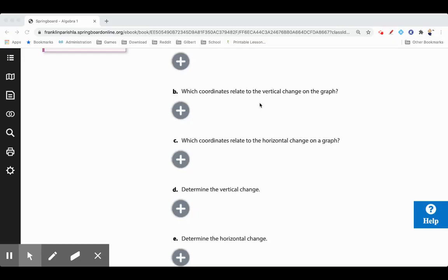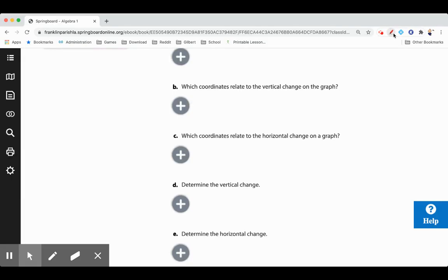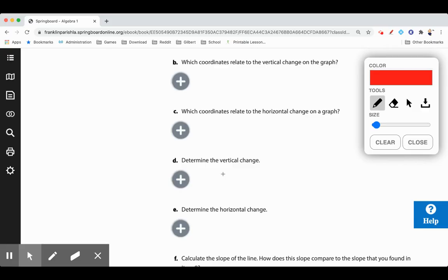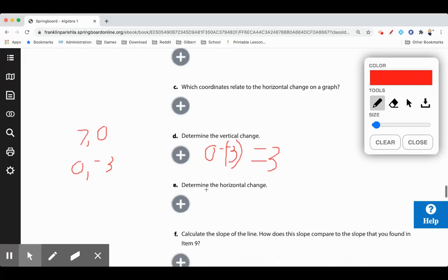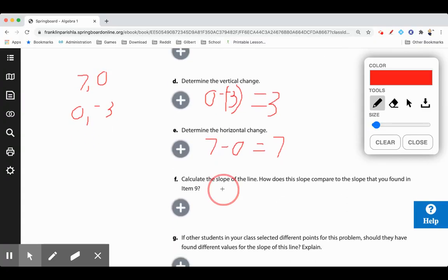Which coordinates relate to the vertical change? The y coordinates. Which coordinates relate to the horizontal change? The x coordinates. Determine the vertical change. For our two points that we used, we said there was 7, 0, and 0, negative 3. So we want to determine the vertical change, we would say 0 minus negative 3, which equals 3. The horizontal change, 7 minus 0, which equals 7. And then calculate the slope. Well, that's the vertical change, change in y, over the horizontal change, change in x, which is 3 over 7.